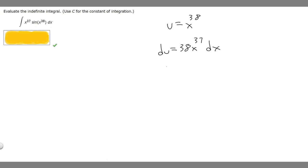So now what we want to do is solve for dx. So we just divide both sides by 38 x to the 37. And then when we do that we'll get that dx is going to be equal to du divided by 38 x to the 37.